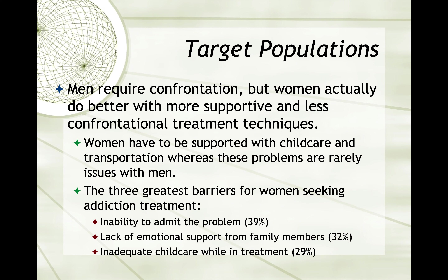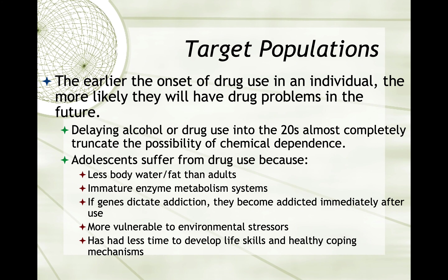Men require confrontation, but women actually do better with more supportive and less confrontational treatment techniques. Women have to be supported with childcare and transportation, whereas these problems are rarely issues with men. The three greatest barriers for women seeking addiction treatment are: inability to admit the problem at about 39%, lack of emotional support from family members at 32%, and inadequate childcare while in treatment at 29%. The earlier the onset of drug use in an individual, the more likely they will have a drug problem in the future. Delaying alcohol or drug use into the twenties almost completely eliminates the possibility of chemical dependence.